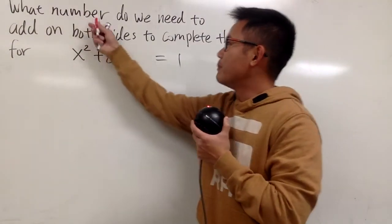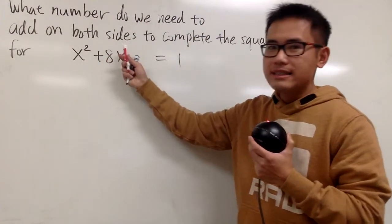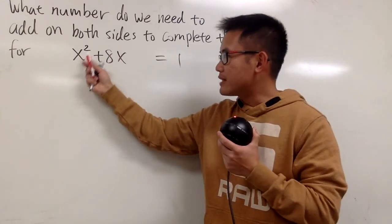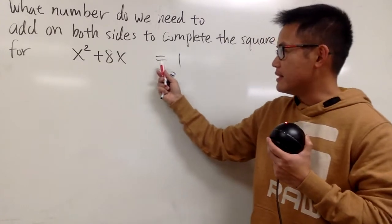Okay, in this equation, we're going to find out what number do we need to add on both sides to this equation so we can complete the square. And as we can see, we have x squared plus 8x, and then this is equal to 1.